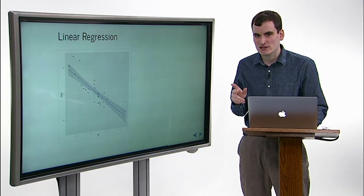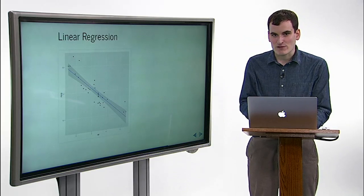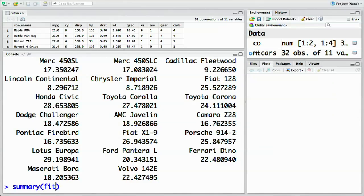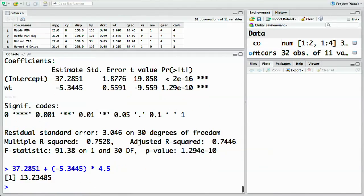But what if we wanted to predict the gas mileage of a car that has a weight of, say, 4,500 pounds? We could do this by adding together the intercept term and the coefficient estimate times the weight. So if summary of fit looks like this, we can add together the intercept term, 37.2851, plus the weight coefficient, negative 5.3445, times our new weight, which is 4.5 thousands of pounds. This would predict a fuel efficiency of 13.2 miles per gallon. This is what a linear model actually means. It's a linear combination of the intercept and the slope.